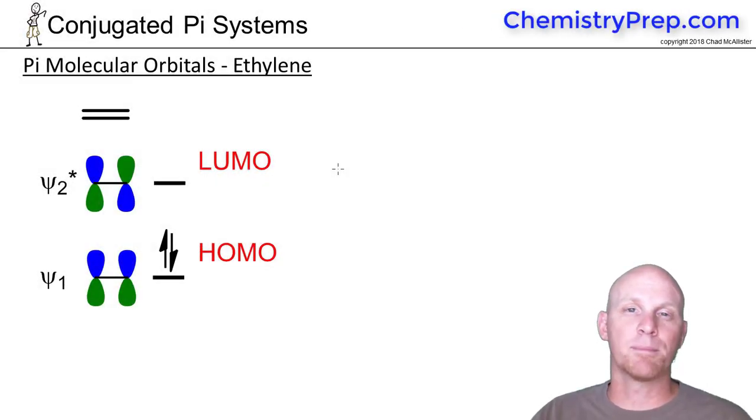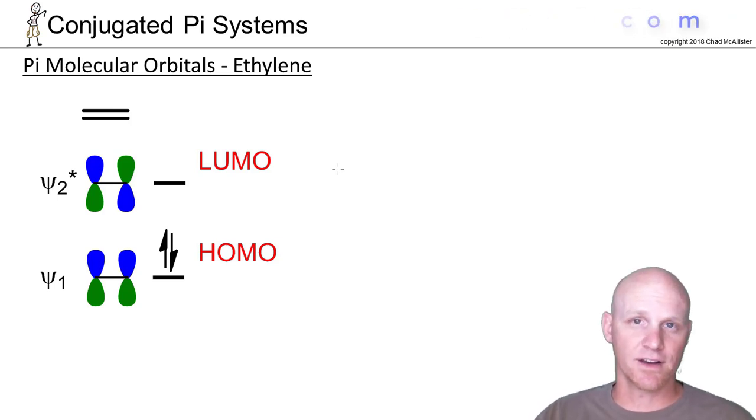Now we need to spend some time looking at what are called the pi molecular orbitals. We'll actually start with a molecule that's not conjugated as an introduction and then definitely apply it to all the conjugated systems we need to study here.